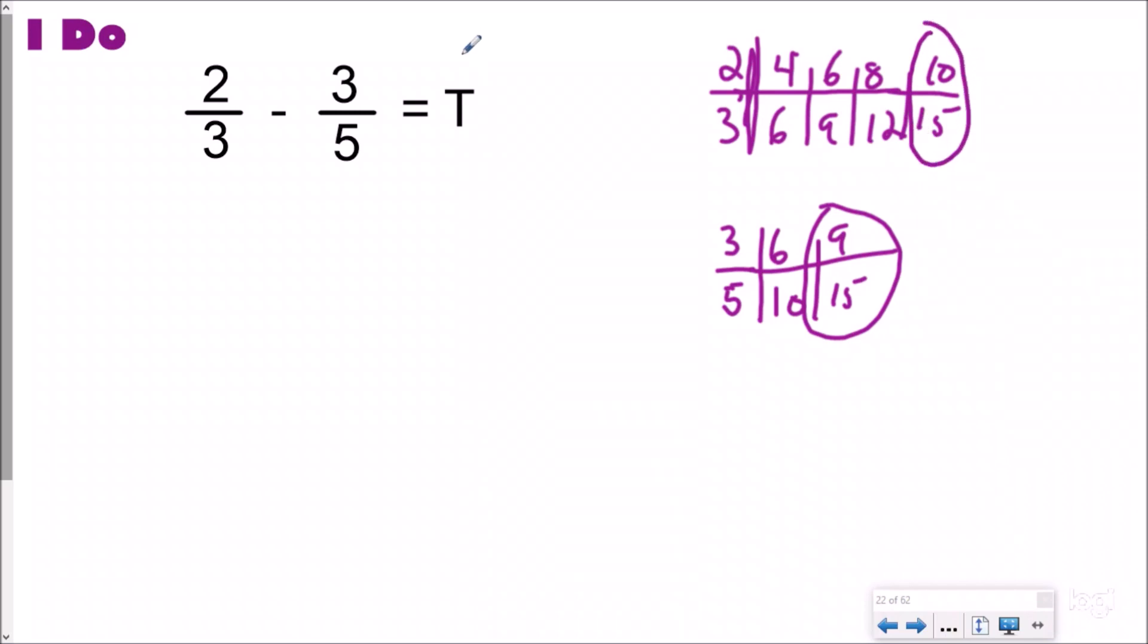So I'm going to rewrite my fractions with the equivalent fractions with a common denominator. So two thirds became ten fifteenths. I know that three fifths became nine fifteenths. And so when I subtract these I get an answer of one fifteenths. So for this we could say that t equaled one fifteenths.